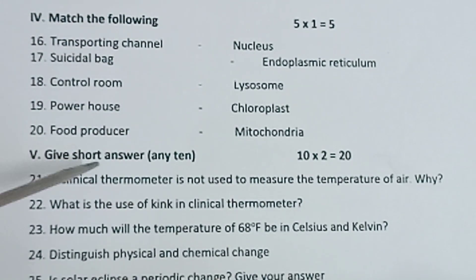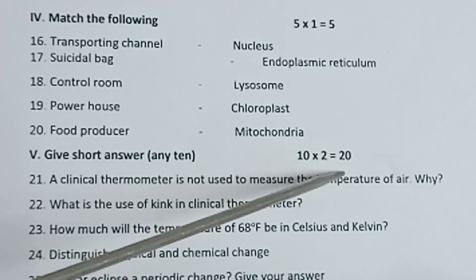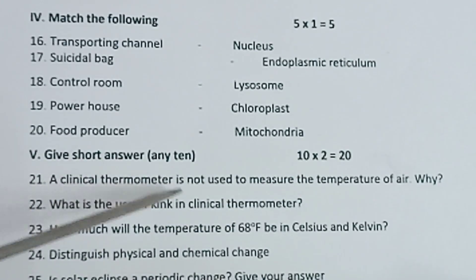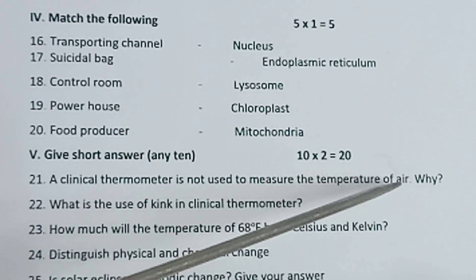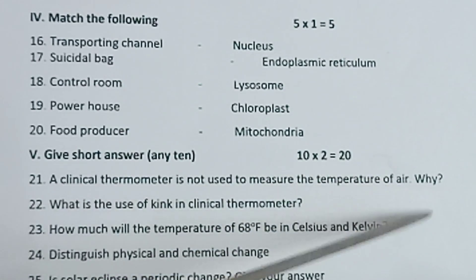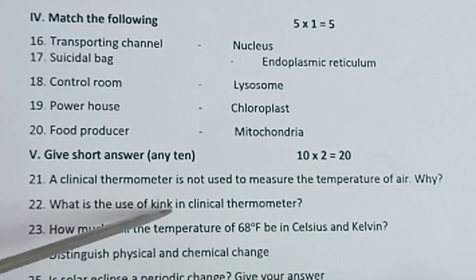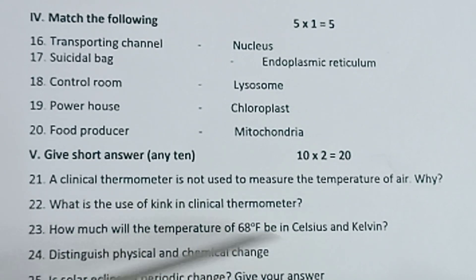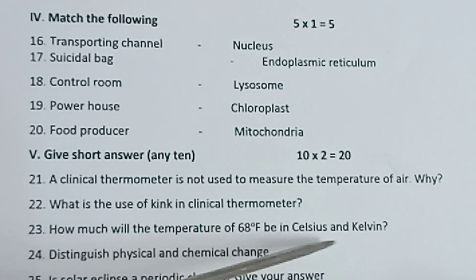Section V — give short answers, any 10. 10 into 2 is equal to 20. Twenty-first one: A clinical thermometer is not used to measure the temperature of air — why? Twenty-second one: What is the use of the kink in a clinical thermometer? Twenty-third one: How much will the temperature of 68 degrees Fahrenheit be in Celsius and Kelvin?